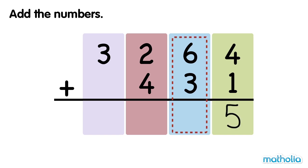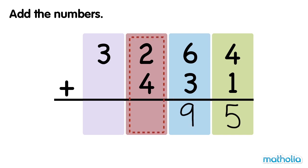Next, add the tens. 6 tens plus 3 tens equals 9 tens. Next, add the hundreds. 2 hundreds plus 4 hundreds equals 6 hundreds.